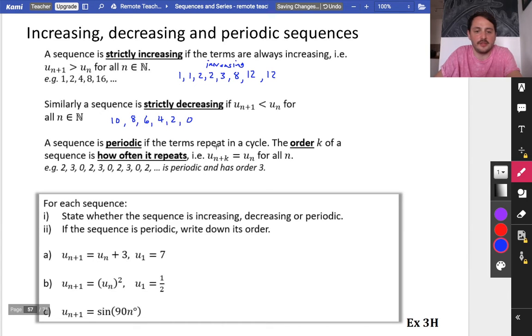And a sequence is periodic if the terms repeat in a cycle. The order k of a sequence is how often it repeats. So if u_{n+k} is equal to u_n for all n, then that means it's periodic.